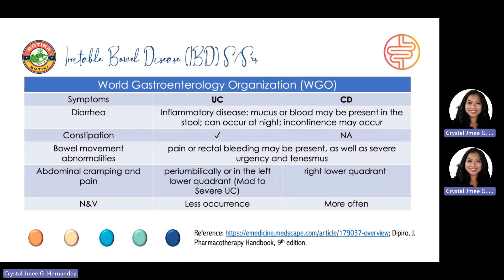Based on the World Gastroenterology Organization or WGO, there are signs and symptoms associated with IBD. First, we have diarrhea — an inflammatory disease wherein mucosal blood may be present in the stool, it can occur at night, and incontinence may also occur. Grossly bloody stools, occasionally with tenesmus, although typical of ulcerative colitis, are less common in Crohn's disease. Stools may be formed but loose stools predominate if the colon or the terminal ileum is involved extensively. 50% of patients with Crohn's disease may present with perianal disease such as fistula or abscesses.